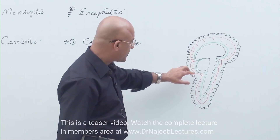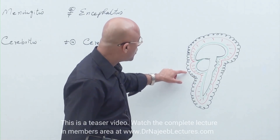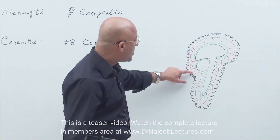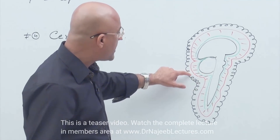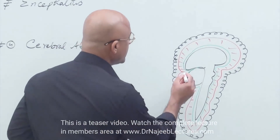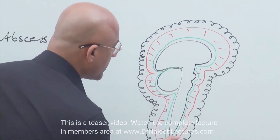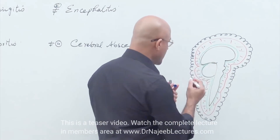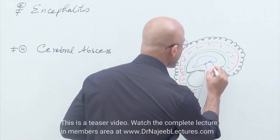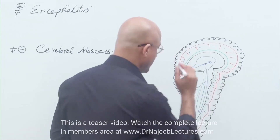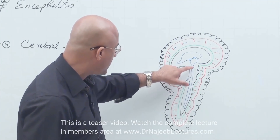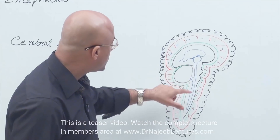Basically, the central nervous system is covered by three protective layers. From outside moving inward: first the durameter, which is fibrous and tough; then the arachnoid mater and piamater, which are two delicate membranes. In between the arachnoid layer and the pial layer, there is a trabecular meshwork filled with cerebrospinal fluid — CSF. CSF is also present in the ventricular system, including the lateral ventricles, third ventricle, aqueduct of Sylvius, fourth ventricle, and spinal canal.